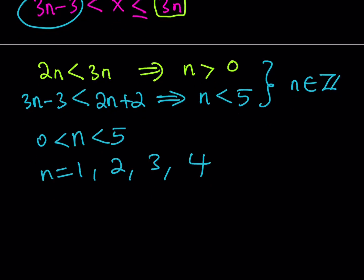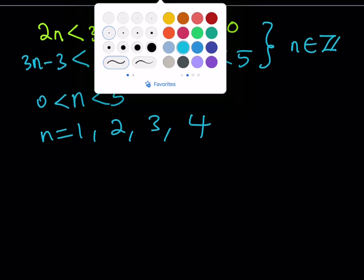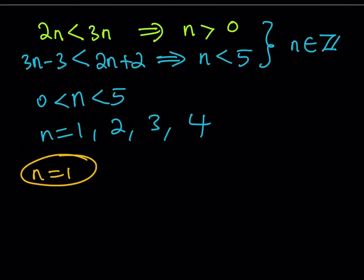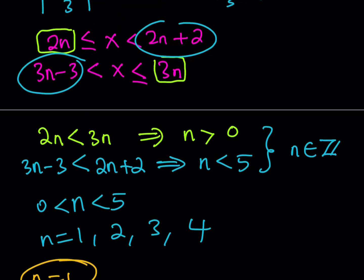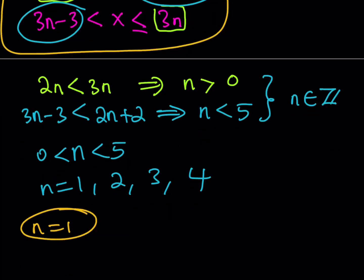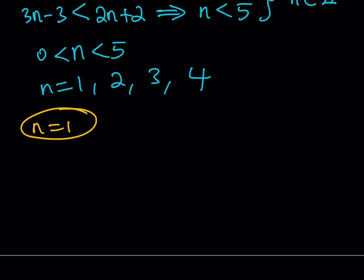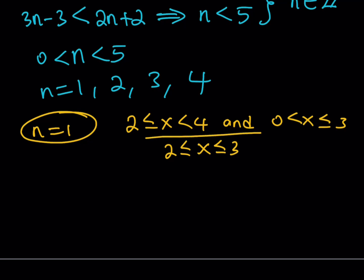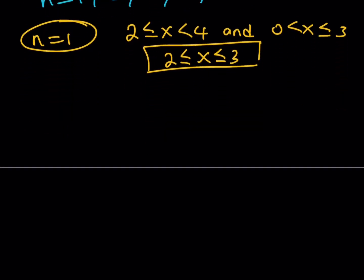Let's look at each case carefully. If n equals 1, substituting into both inequalities gives x between 2 and 4, and x between 0 and 3. The intersection of these two inequalities is x between 2 and 3, inclusive on both ends.